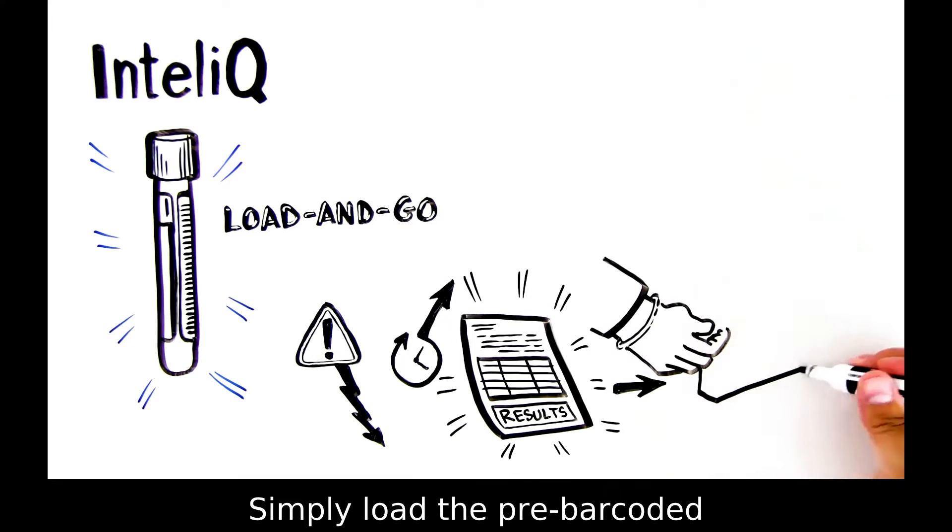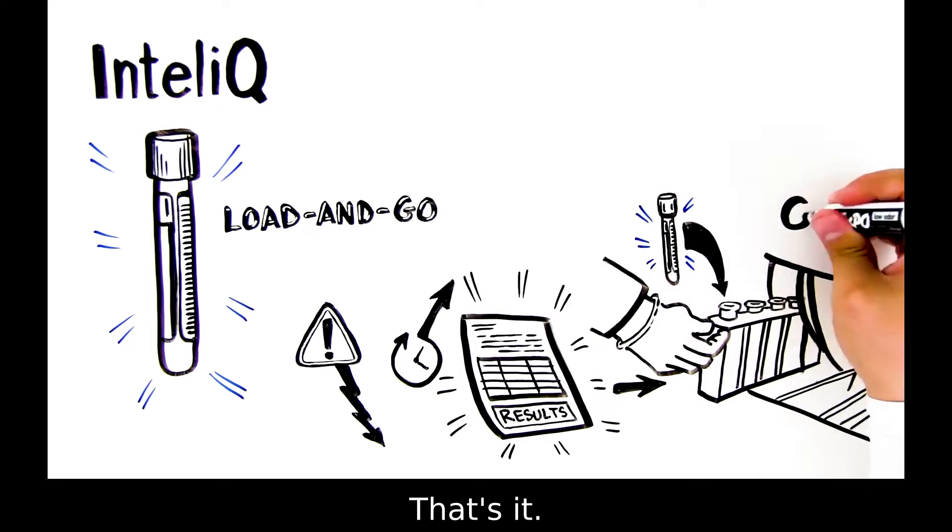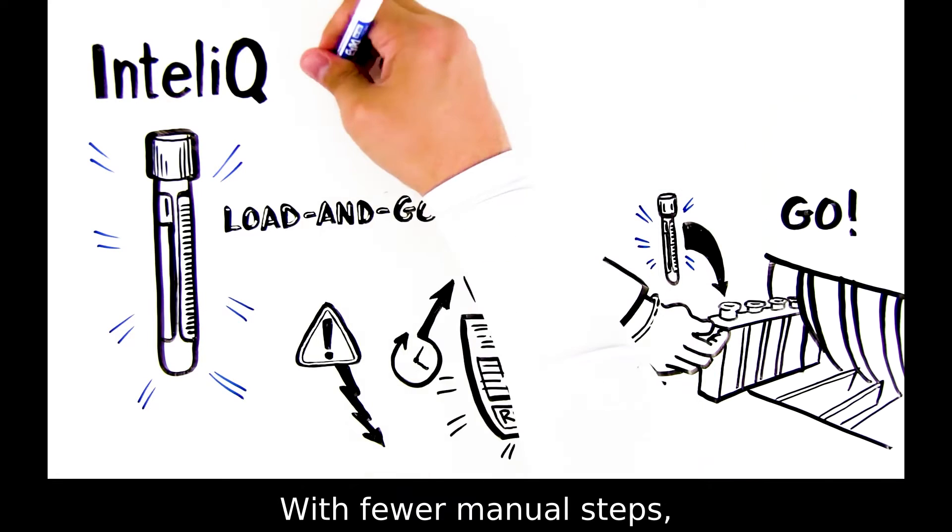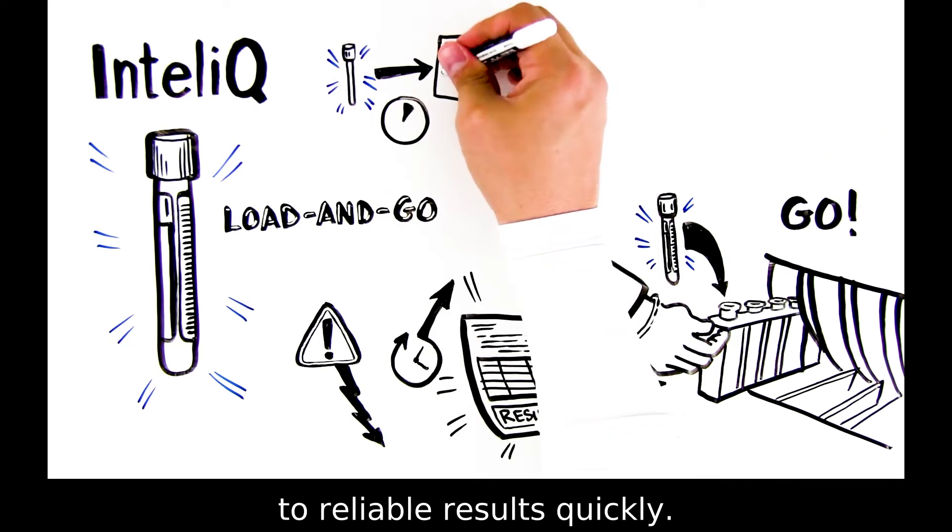Simply load the pre-barcoded QC tube onto your automated platform and go. That's it. With fewer manual steps, human error is minimized, getting you from samples to reliable results quickly.